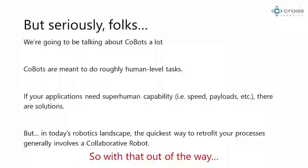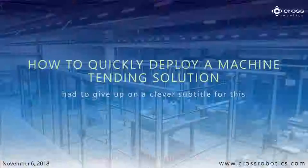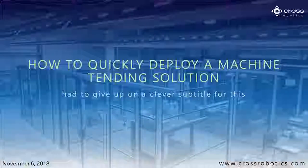A lot of times, if your applications need superhuman capability — so if you have heavy payloads, more than a person can comfortably be picking up all day, or super fast speeds — a cobot's probably not right. But typically machine tending specifically tends to be human-tended, and if it's being done manually and you want to replace it with a robot, a cobot's usually the quickest way to get in there. Let's talk about how to quickly deploy a machine tending solution.